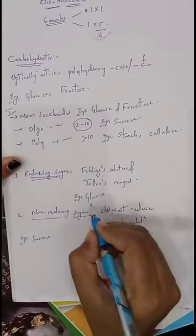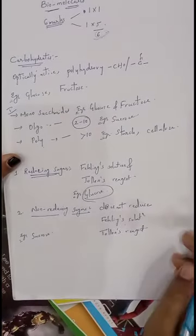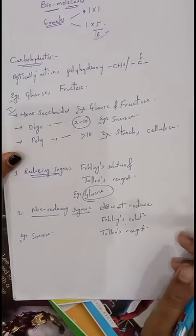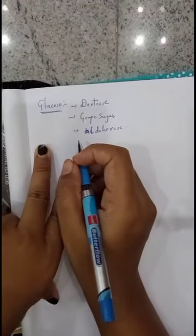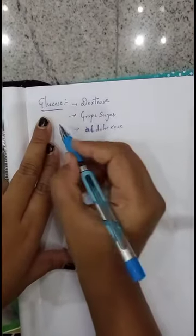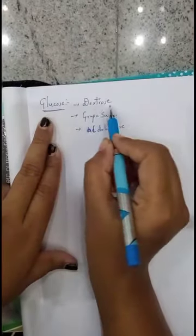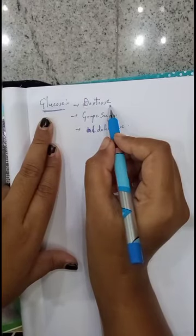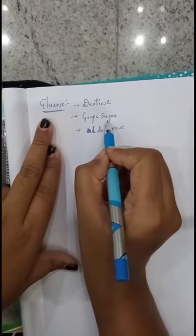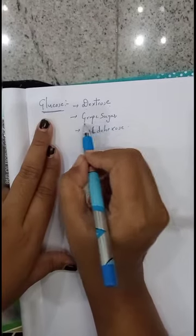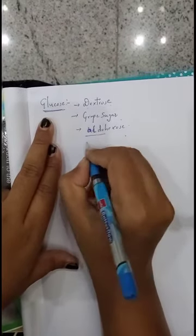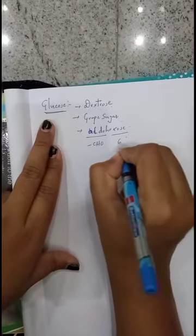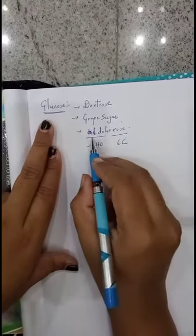In your syllabus you have about the reducing sugar that is nothing but glucose — its preparation and properties. Now we will discuss about glucose. Glucose is also known as dextrose because it can rotate the plane of polarizing light towards the right side. It is also known as grape sugar because most glucose is present only in grapes. Glucose is also known as aldohexose because its functional group is aldehyde and hexose indicates the presence of six carbon atoms.